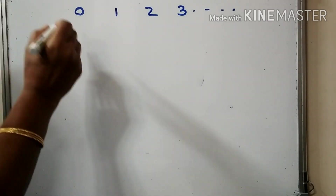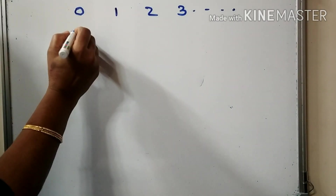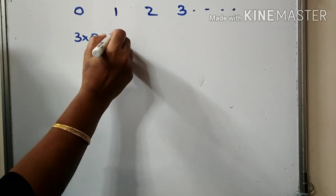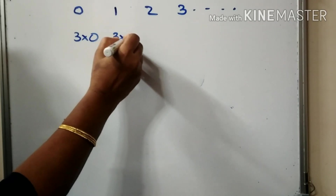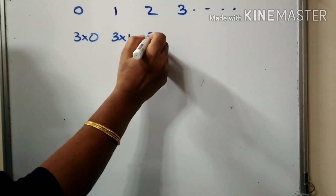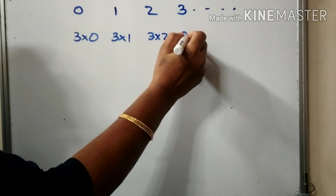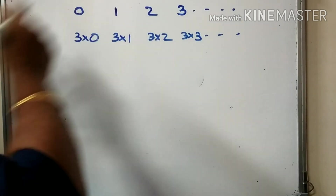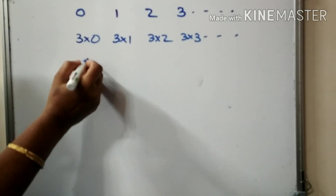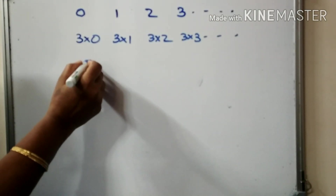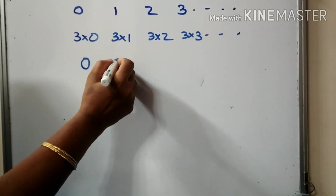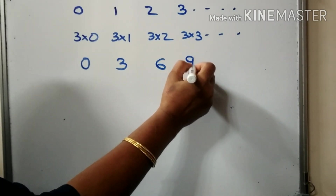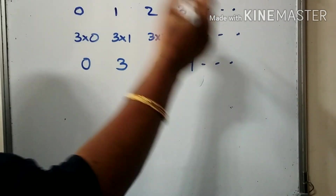That's what 3 is. Multiply: 3 into 0, 3 into 1, 3 into 2, 3 into 3, etc. So 3 into 0 is 0, then 3, 6, 9, etc.